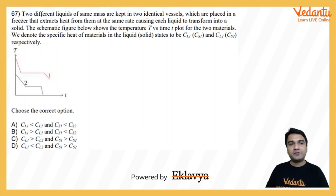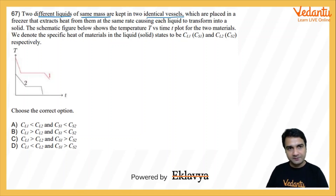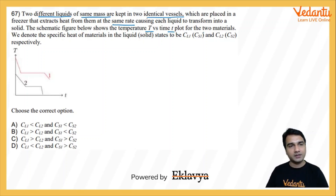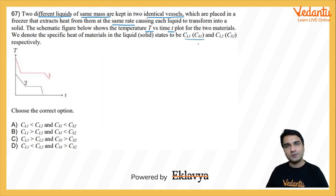Two different liquids of same mass are kept in two identical vessels which are placed in a freezer that extracts heat from them at the same rate, causing each liquid to transform into a solid. This schematic figure below shows temperature T versus time t plot for the two materials. We denote the specific heat of material in the liquid and solid states to be CL1 and CL2 respectively.